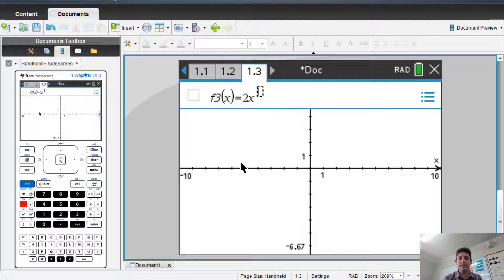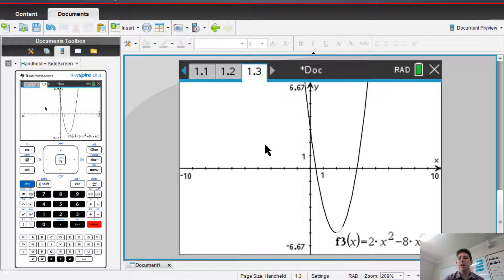So y equals 2x. You type in your graph. On the exam, we need to label our points, right?